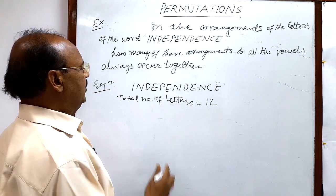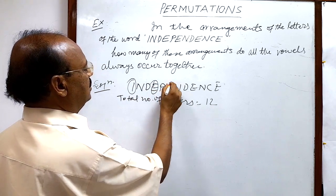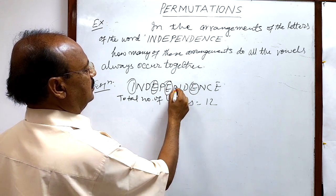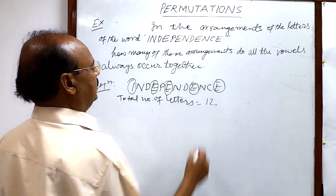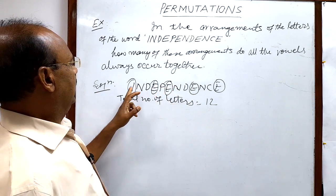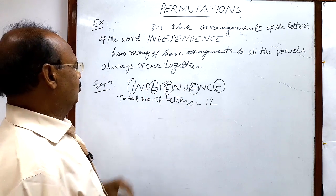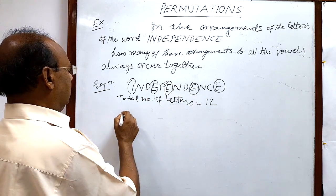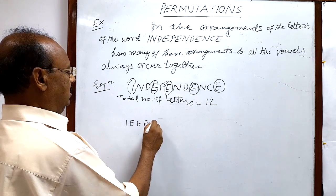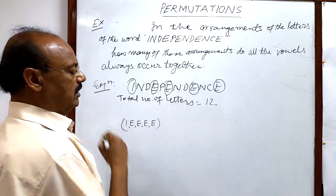So let us see how many vowels are here: I, E, E, E, and E. So we have 4 E's and 1 I — these are 5 vowels and they have to come together.